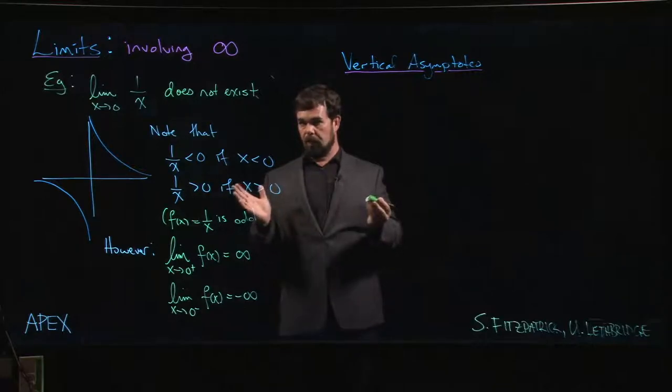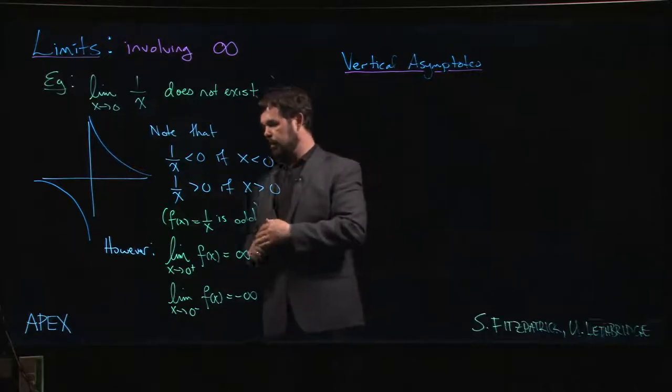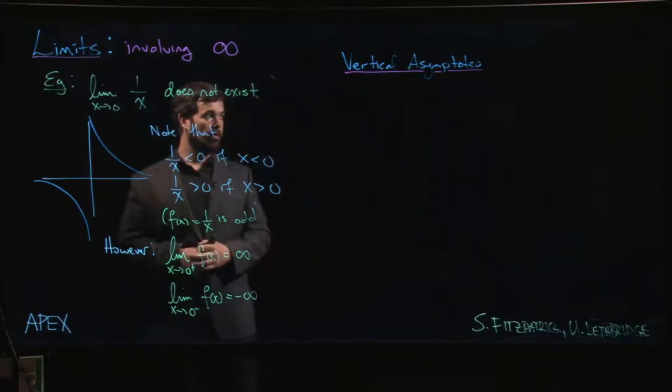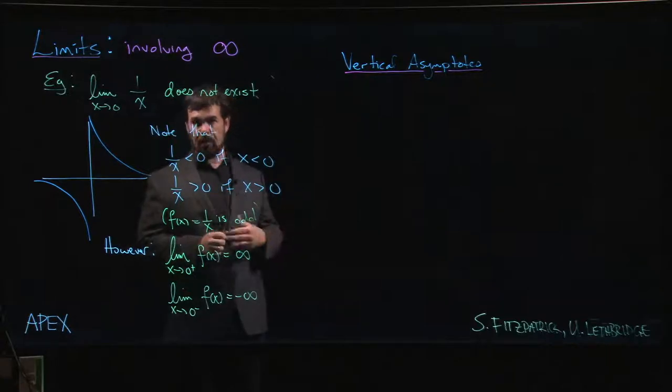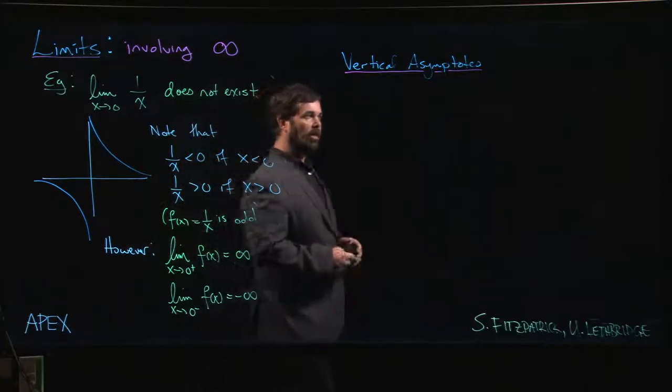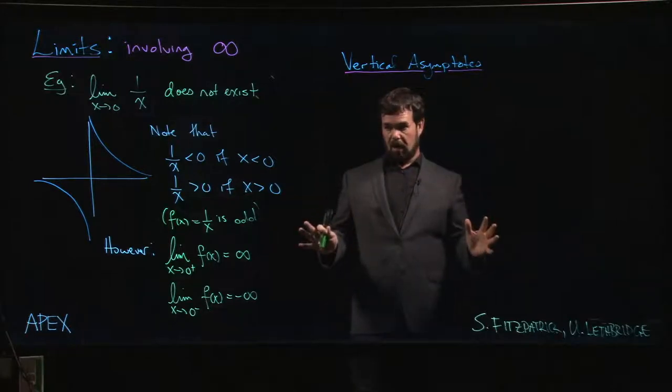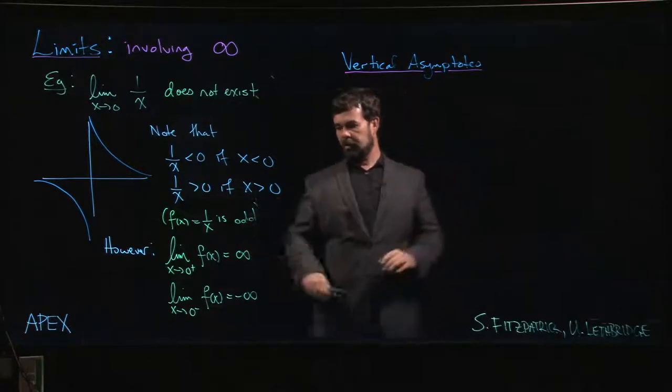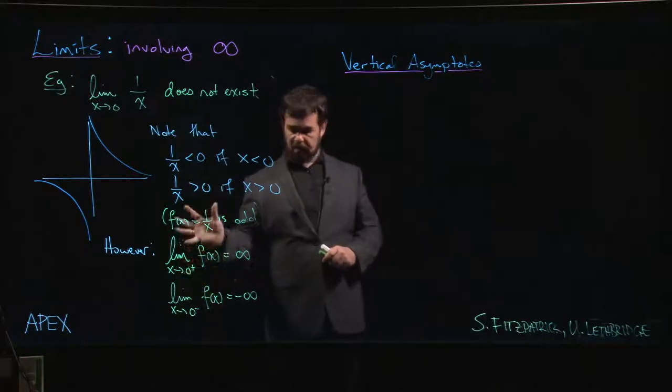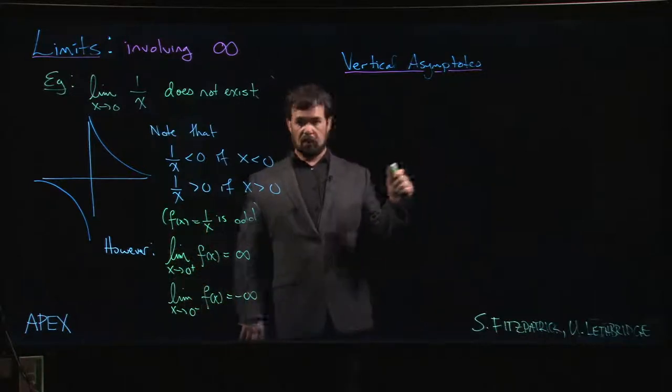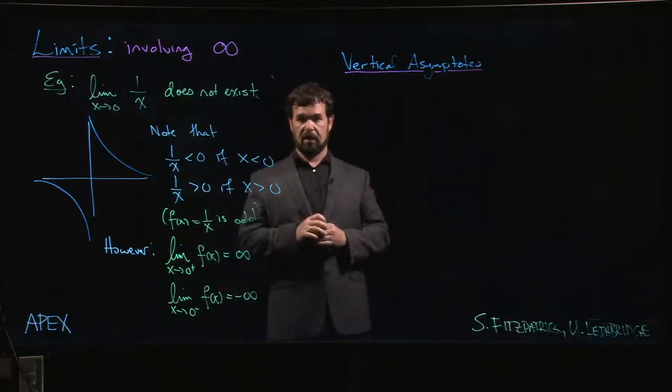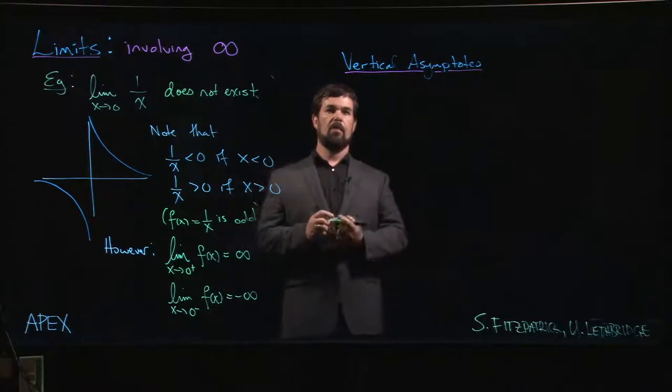I've used the term vertical asymptote in both of the last examples, but we haven't quite formally defined what this means. The first thing to keep in mind is that a vertical asymptote is a property of a graph, whereas limits are intrinsic to a function. We take the limit of a function, but a vertical asymptote is a particular property that the graph of that function might have.